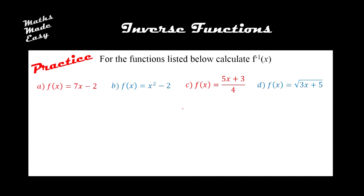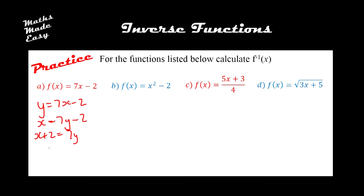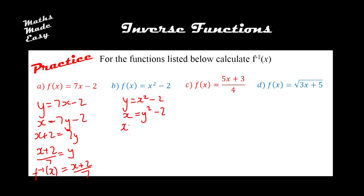Here are four functions to practice — work out f inverse for each. For the first one: y equals 7x minus 2; interchange to get x equals 7y minus 2; rearrange to get x plus 2 equals 7y, so f inverse of x equals x plus 2 over 7. For the second one: y equals x squared minus 2; interchange; then x plus 2 equals y squared, so f inverse of x equals the square root of x plus 2.